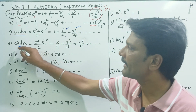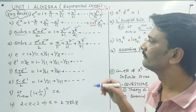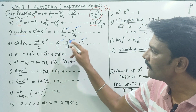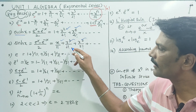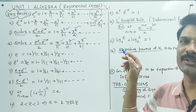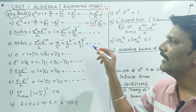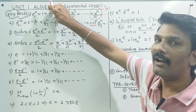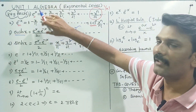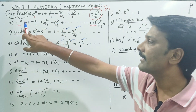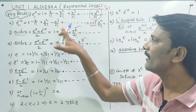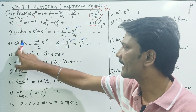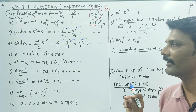sinh x is odd power: 1 factorial, 3 factorial, 5 factorial. Cosh x is even power, even factorial. Sinh x is odd power, odd factorial.